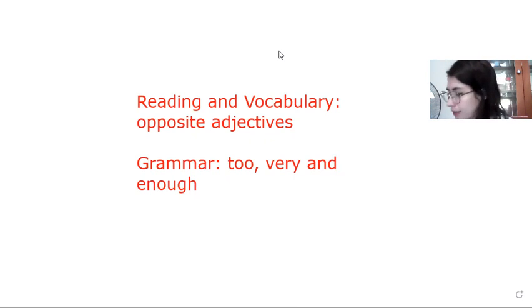Tenemos unas palabras que son adjetivos y las van a unir estos pares, los opuestos, the opposite adjectives, y las pueden copiar en su cuaderno. Les voy a ayudar porque a lo mejor son palabras nuevas, ¿verdad? Exciting, emocionante, es lo opuesto que dull, que es aburrido. Interesting sería lo opuesto que boring, también interesante y aburrido. Funny es el opuesto de serious.